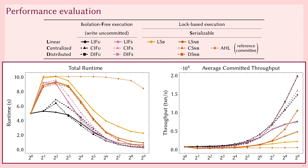We can combine the orchestration and execution methods of BiShard to obtain 18 different multi-shard transaction processing protocols. Furthermore, protocols such as AHL and ChainSpace can also be expressed within the orchestrate-execute model. To evaluate the strengths of each protocol, we have performed an in-depth performance evaluation, though we had to omit some results in this presentation.